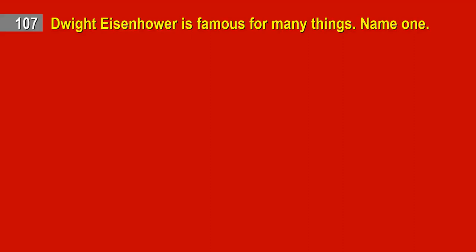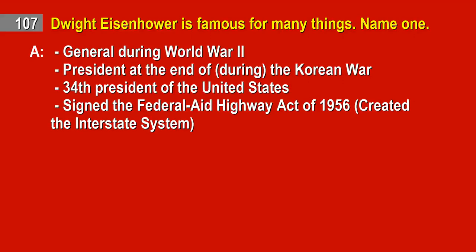Question 107. Dwight Eisenhower is famous for many things. Name one. Answer: General during World War II. President at the end of, during, the Korean War. 34th President of the United States. Signed the Federal Aid Highway Act of 1956. Created the Interstate System.